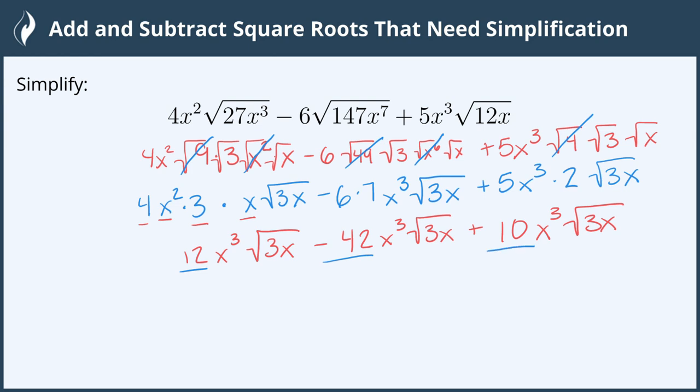12 minus 42 is negative 30. Negative 30 plus 10 is negative 20. So when we add all of those together we get negative 20. And because the variable makeup is the exact same along with the radical we keep that. So we get negative 20x³ square roots of 3x. And now we're all done.